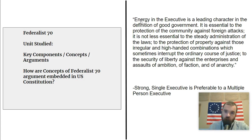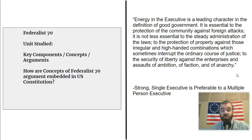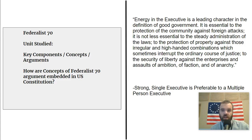Hamilton says: 'Energy in the executive is a leading character in the definition of good government. It is essential to the protection of the community against foreign attacks. It is not less essential to the steady administration of the laws, to the protection of property against those irregular and high-handed combinations which sometimes interrupted the ordinary course of justice, to the security of liberty against the enterprises and assaults of ambition, of faction, and of anarchy.' He's saying every reason we're trying to create this Constitution will be aided by a strong, single executive. A multi-person executive would be inefficient in decision-making, and decisions sometimes need to be made quickly.